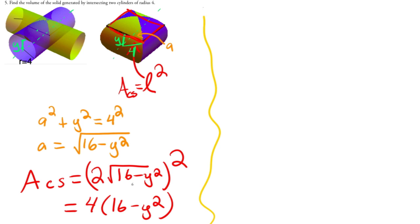Okay, so then my volume is simply going to equal the integral from bottom to the top, so negative 4 to 4, of 4 times 16 minus y squared with respect to y.